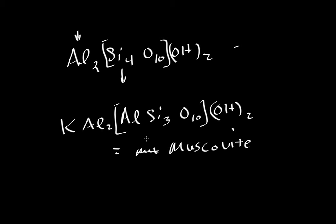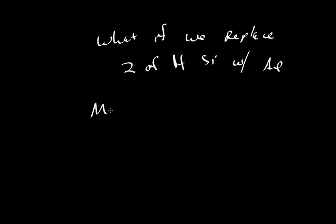As a final variation on a theme, instead of replacing just one out of four silicons, what if we replace two of four silicons with aluminum? Then in that case, we would have Mg, Al2, Si2O10. We'll use square brackets. That indicates our tetrahedral layer, OH2. Now we've lost two charges. We can put in a calcium, and we can also play the same game with aluminum.